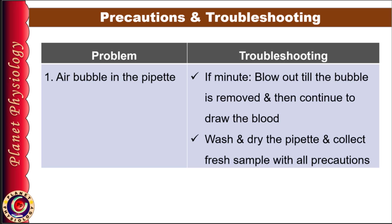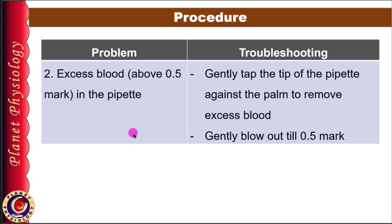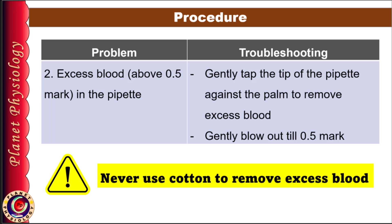Sometimes it is possible that accidentally you draw too much blood above the 0.5 mark. In that case just gently tap the pipette tip against your palm to release the excess blood. Alternatively you can gently blow out the excess blood on your fingertip until you reach 0.5 mark. Very important tip: never use cotton to remove extra blood from the pipette. Cotton absorbs plasma and causes hemoconcentration leading to false high cell count.